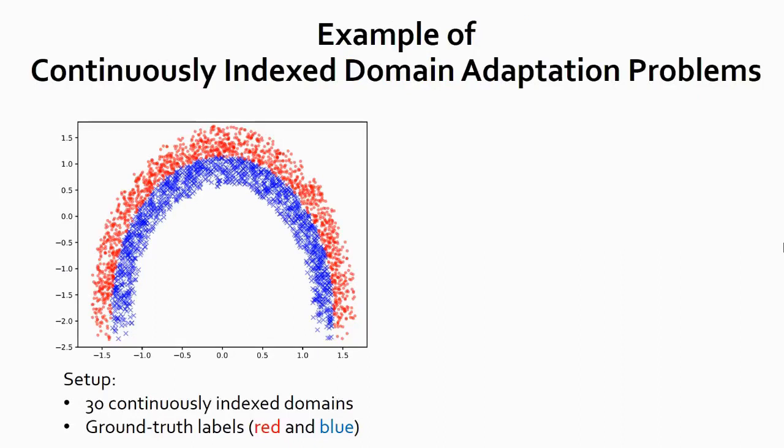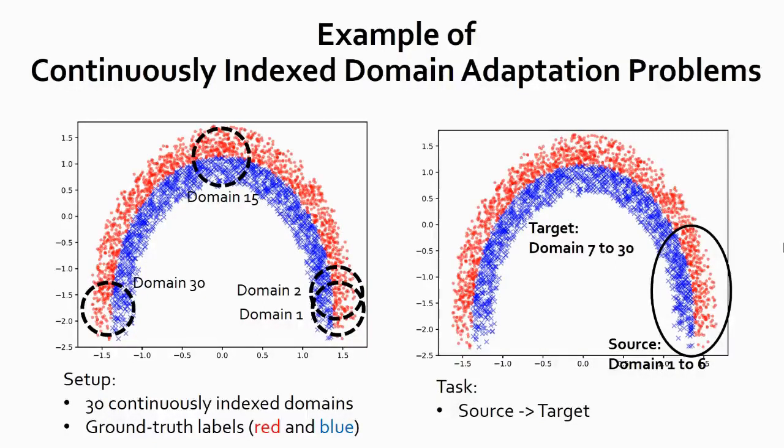To have some intuition about continuously indexed domain adaptation, let's consider the following toy example. Imagine we are performing a binary classification task across 30 continuously indexed domains. Those domains lie on a large circle from domain 1, domain 2, all the way to domain 15 and 30. We color the data by labels, red for positive and blue for negative. The task is, given the labeled data in the first few domains and unlabeled data in other domains, we want to learn a model that works for the target domains.